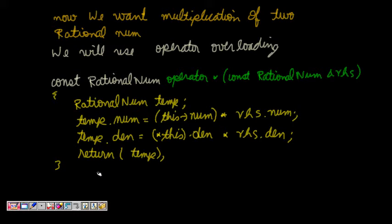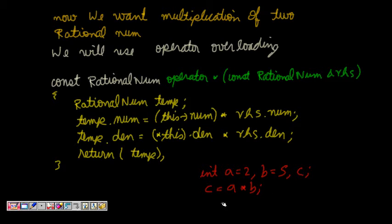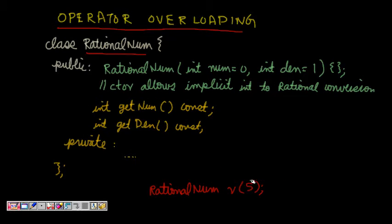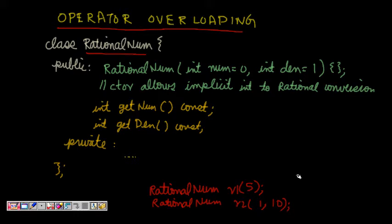Now let's look at multiplication. If I have something like int a = 2, b = 5, then c = a * b gives c = 10. But I want something similar with my class RationalNumber. So if I write rational r1 = 5 and rational r2 as (1, 10), I want r3 = r1 * r2 to give me 5/10, which simplifies to 1/2. I should get this kind of result for class objects too.